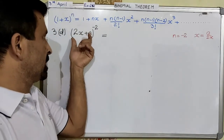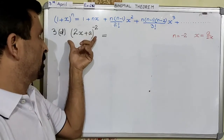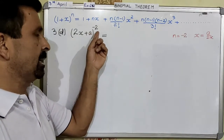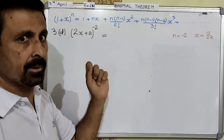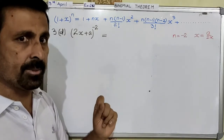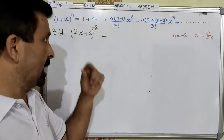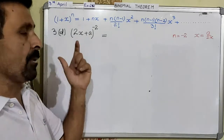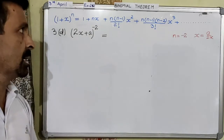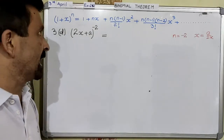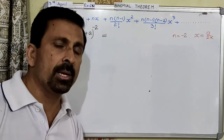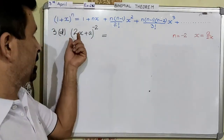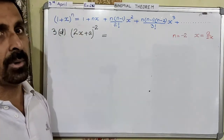Now, this is your question — a binomial whose degree is negative, and we are going to write the binomial expansion. But here in this question there is a problem, because for the negative index or for the fractional index, we always expect the first term of the binomial to be 1. But here the first term of the binomial is not 1.